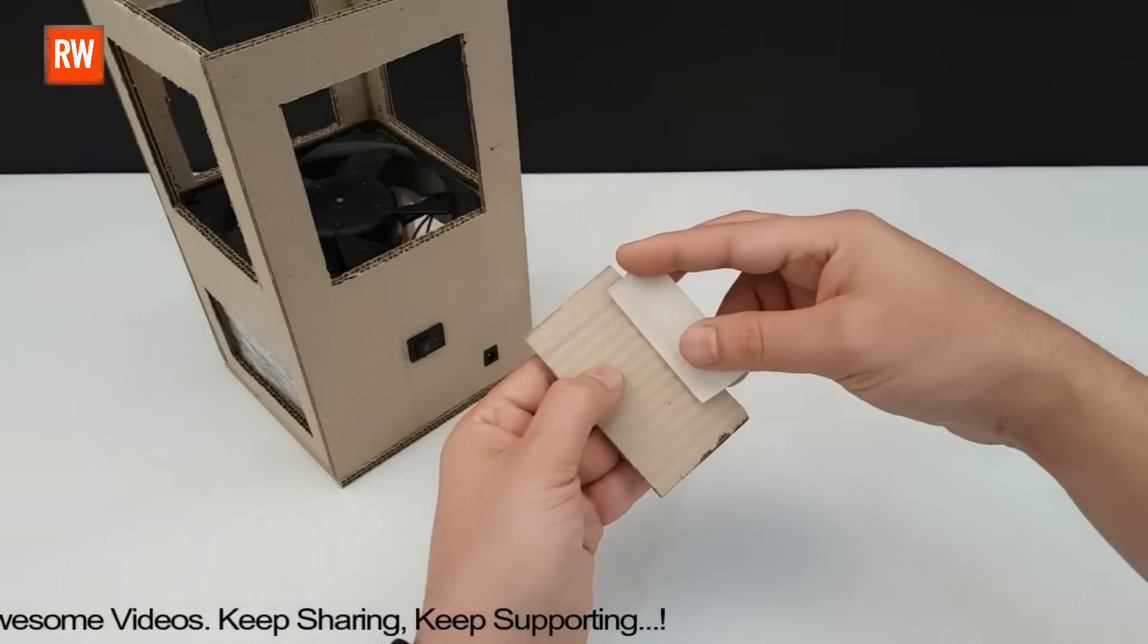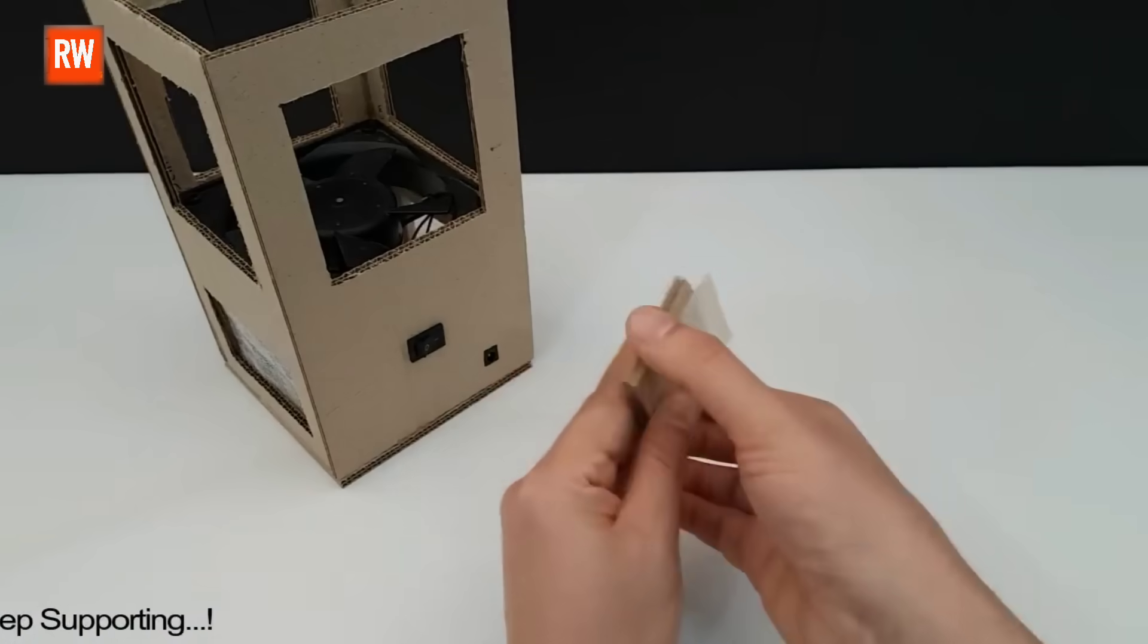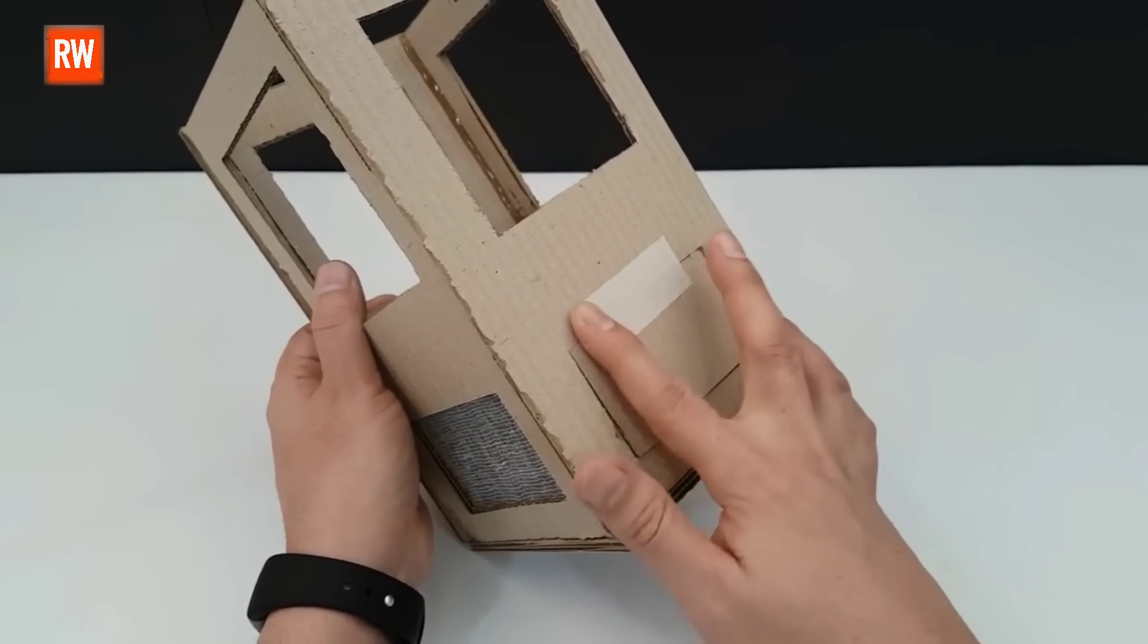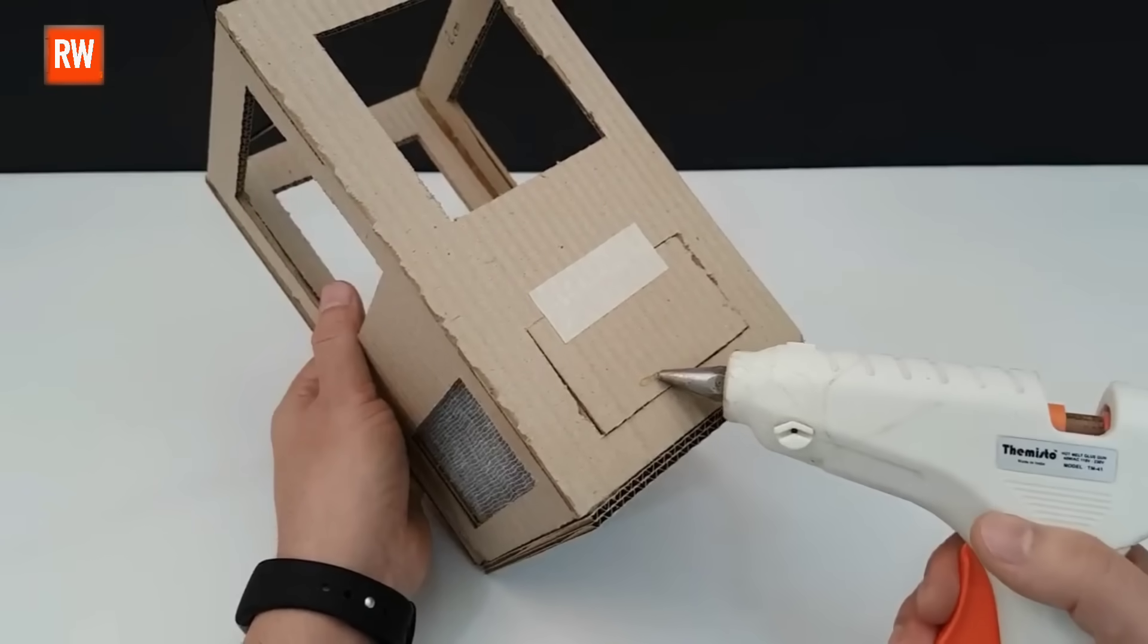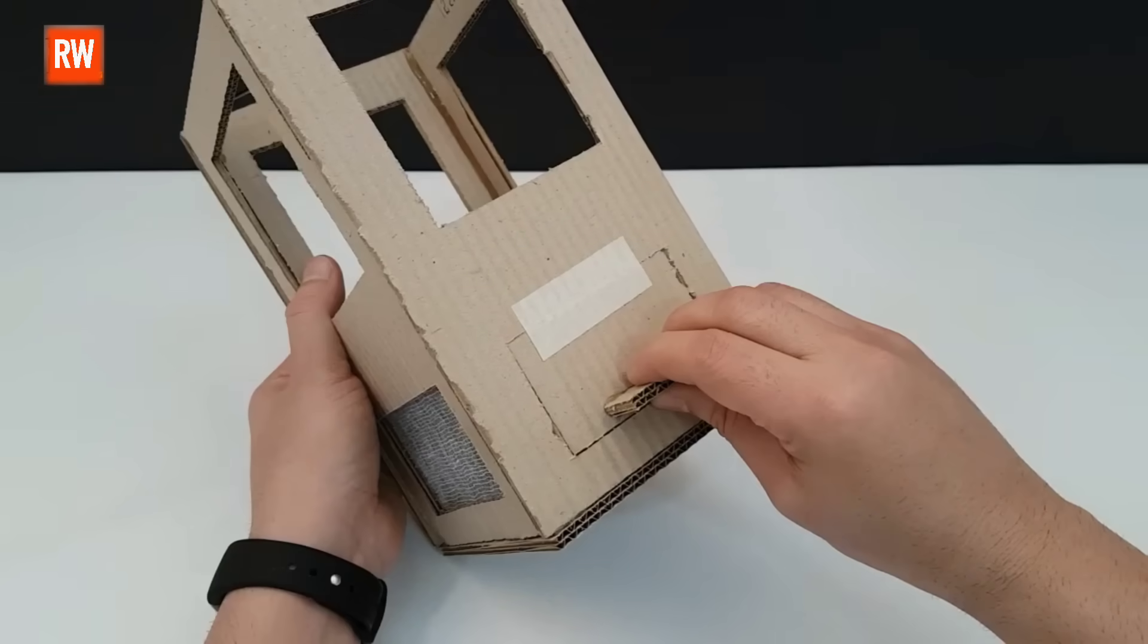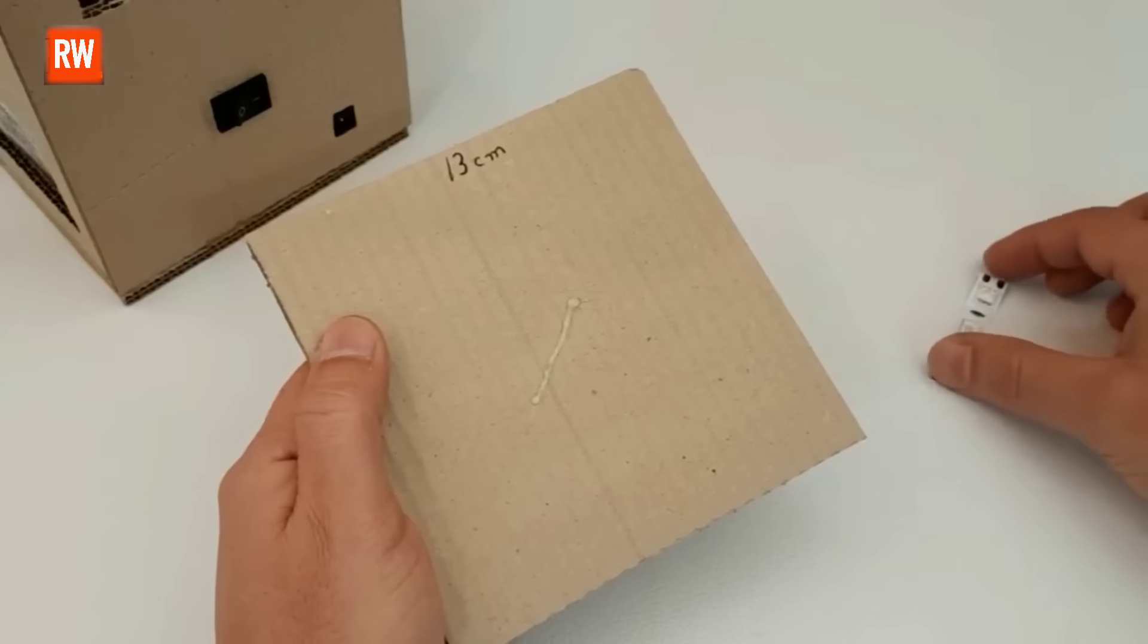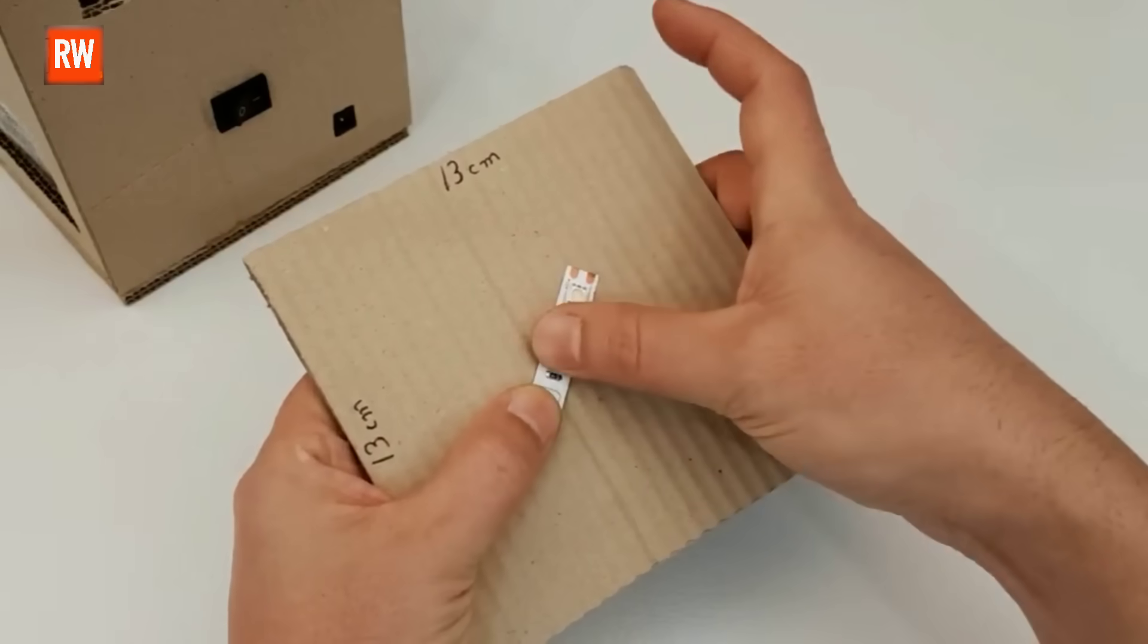Now it's time to cover the opening using a cardboard piece. Just like you're seeing here, it'll seal everything up nice and clean. We've completed that part. A small cardboard piece is added to act as an opening lid. And now we're moving on to the top section. Here we'll attach the upper cardboard piece, and right at the center of it we'll fix the UV LED light using a hot glue gun for a secure hold.